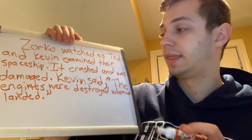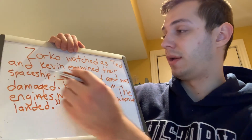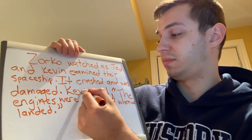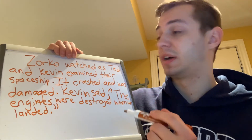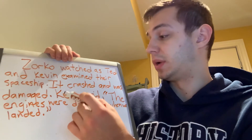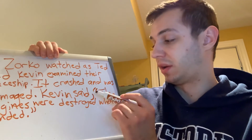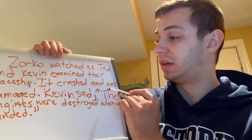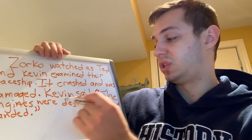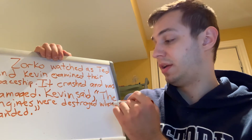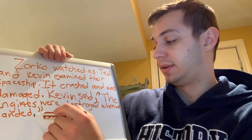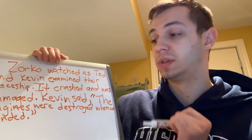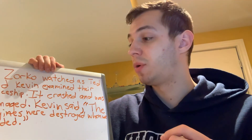Kevin said: the engines were destroyed when we landed, period, closing quotation marks. It can still be part of my first paragraph because no one else has spoken. So: Kevin said, comma, quotation marks, capital T. The engines were destroyed when we landed, period, and then my closing quotation marks. Next, I'm going to want to write what Ted said.